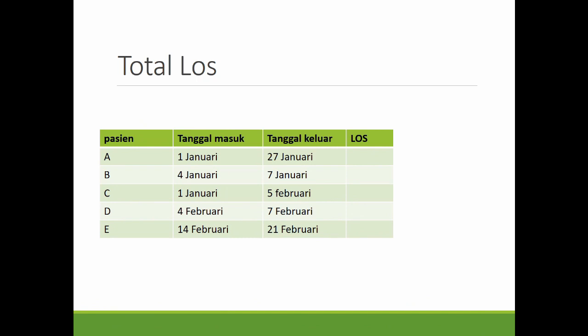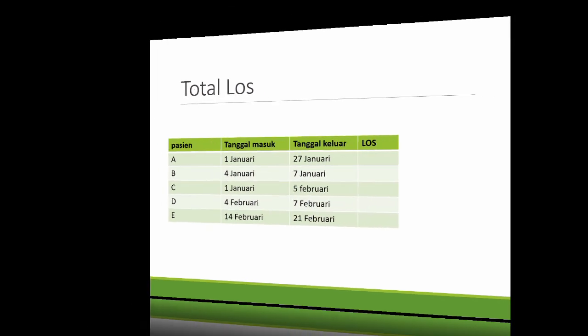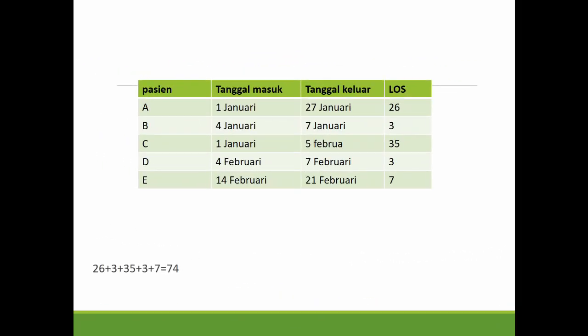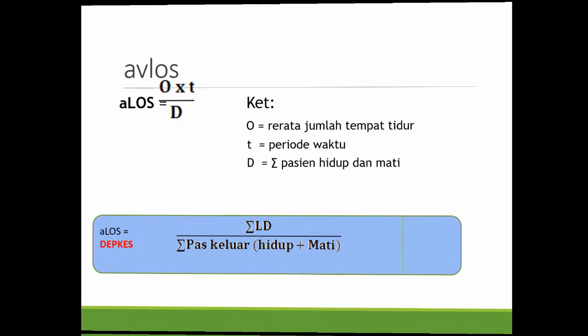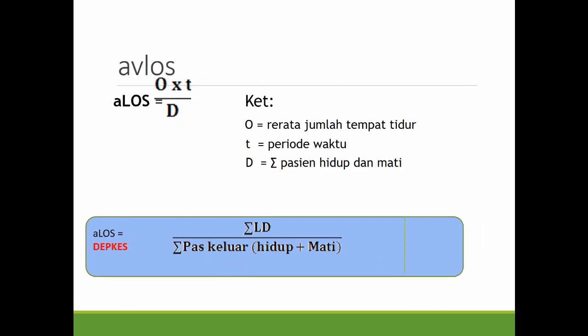Selanjutnya adalah total ALOS. Silakan dihitung sendiri. Jawabannya: pasien A adalah 26, 3, 3, 5, 3, tambah 7, berarti total ALOS-nya adalah 74. Mencari ALOS yaitu O × T / D. Keterangannya: O itu rata-rata jumlah tempat tidur, T itu periode waktu, D itu pasien hidup dan mati. Untuk Depkes adalah jumlah lama dirawat dibagi jumlah pasien keluar hidup dan mati.